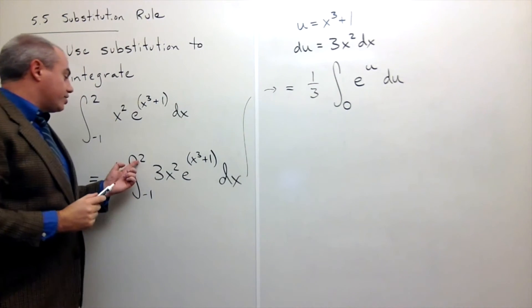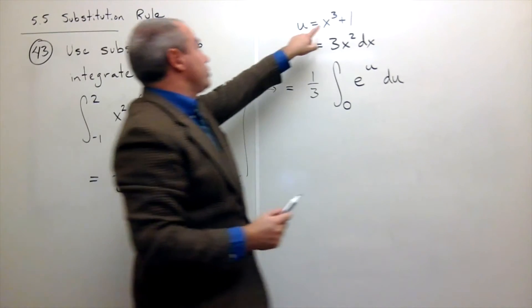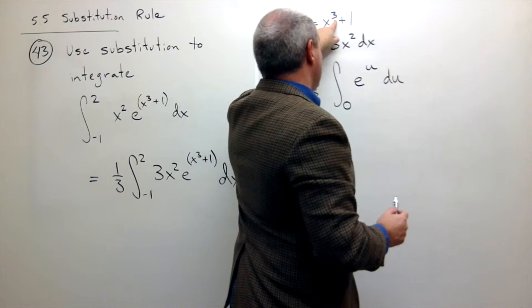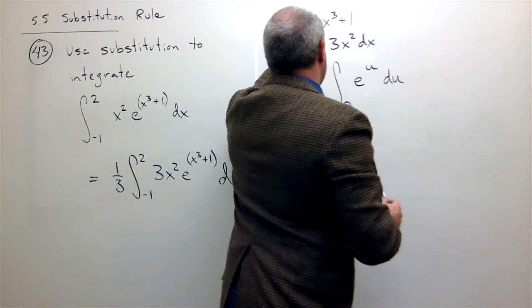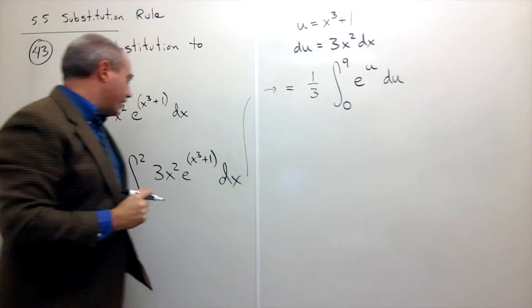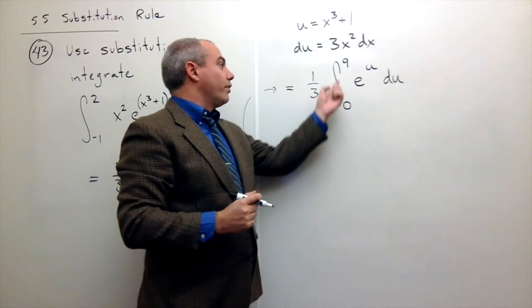Also, I take 2. x goes all the way up to 2. If I plug 2 in up here, I get 2 cubed, which is 8, plus 1, which is 9. So instead of integrating from negative 1 to 2, now I'm integrating from 0 to 9.